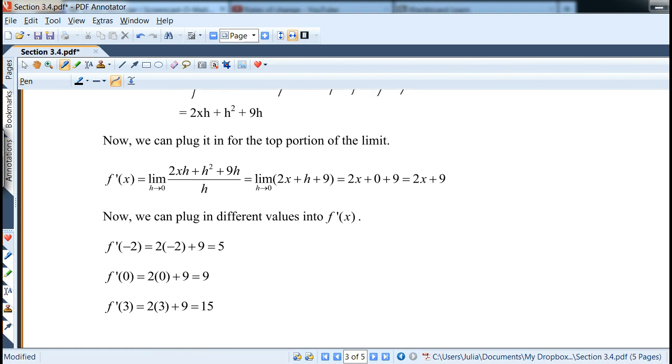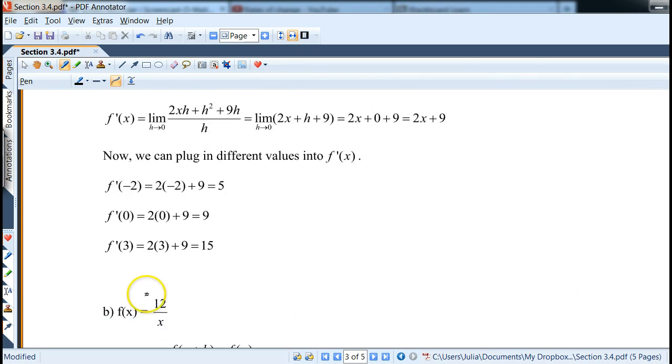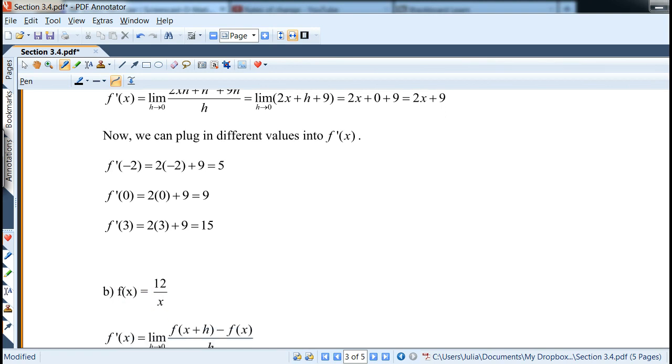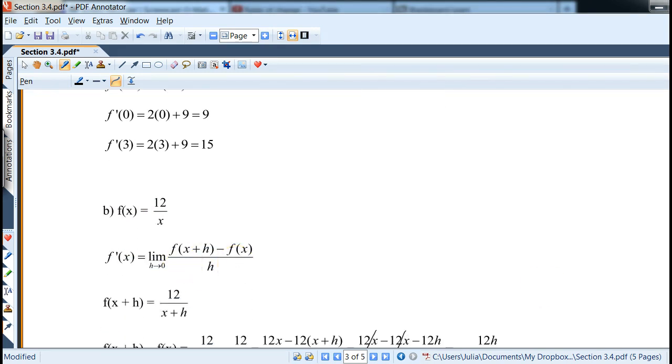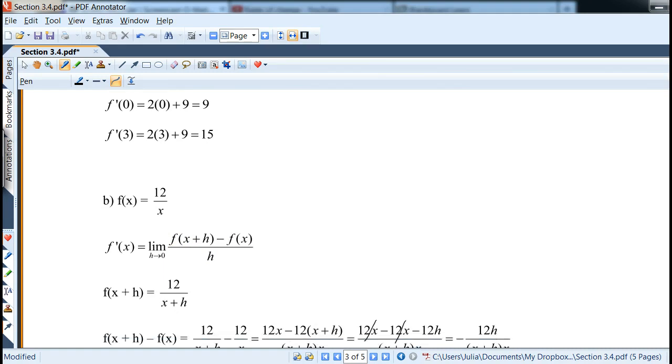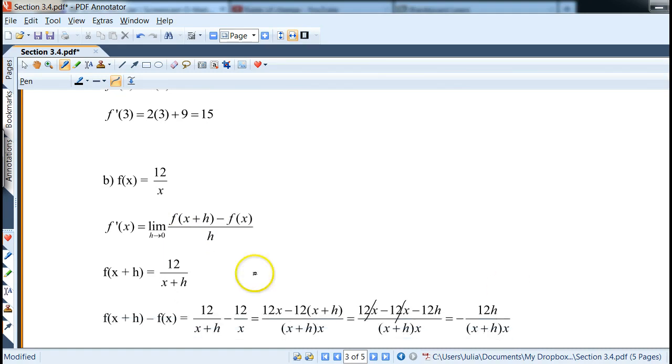Now let's try it with a rational function, 12 over x, which is a little different, although it's a similar idea. We have difference quotient. Notice the first one is easier to do. Let me scroll down a little bit more. We basically plug in x plus h for the denominator. The harder part is probably subtracting the f of x plus h minus f of x, which is 12 over x plus h minus 12 over x. This is where most algebra would come in.